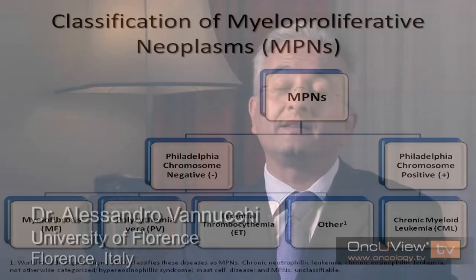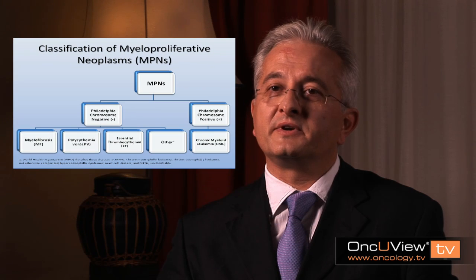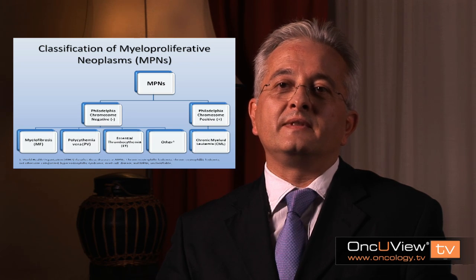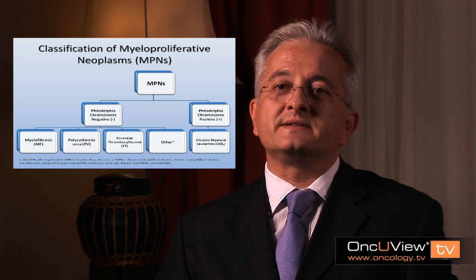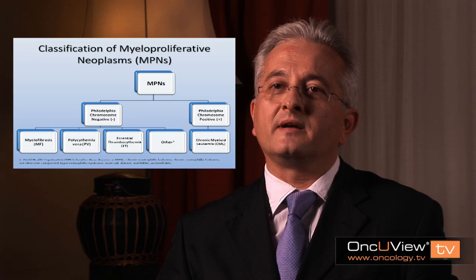MPNs are a group of hematological disorders that are now considered and classified as neoplasia. This is in the revised WHO classification, and of course this does not change the true nature of these disorders compared to the previous WHO classification, but naming them in that way is very important to understand their pathogenesis.